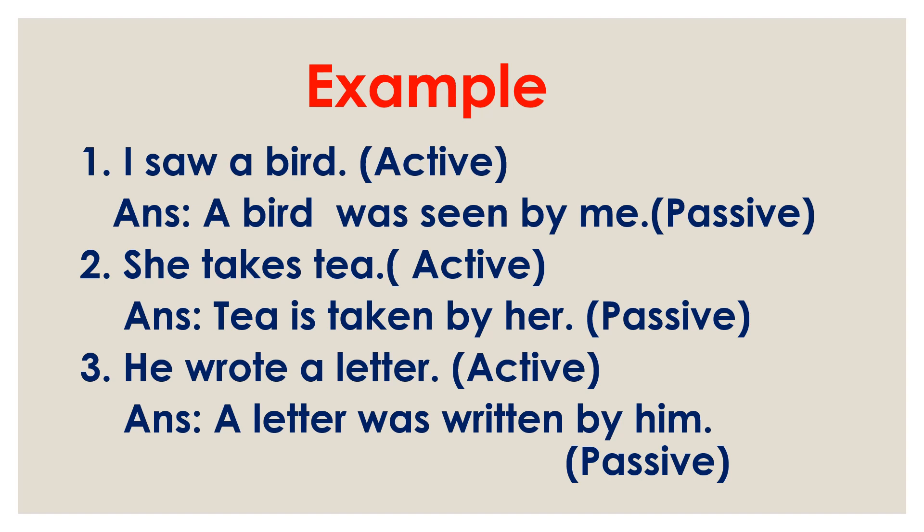Third example: 'He wrote a letter.' Here 'he' is subject, 'wrote' is verb, and 'a letter' is object. So we use 'a letter' first, then helping verb 'was' — because 'wrote' is in past tense — then third form of 'write', that is 'written', then 'by', then 'him'. So the passive is: 'A letter was written by him.'